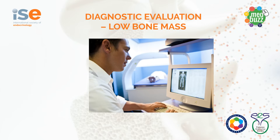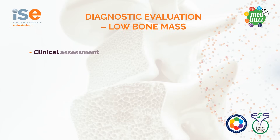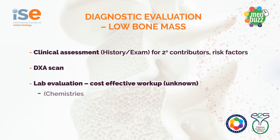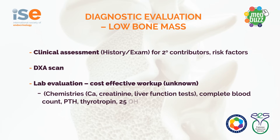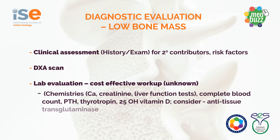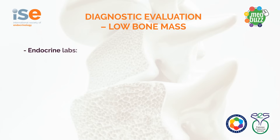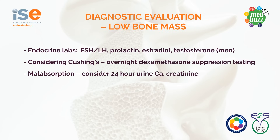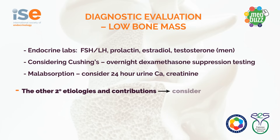In the diagnostic evaluation of low bone mass, we use our clinical assessment tools — history, physical exam, and careful assessment of risk factors in that individual patient. A DEXA scan is very valuable in assessing the quantitative state of bone mass and overall risk. For lab evaluation, we often obtain basic chemistries, vitamin D, parathyroid hormone, and depending on the situation, endocrine labs like gonadotropins, prolactin, estradiol, and testosterone for men. If malabsorption is present or being considered, a 24-hour urine calcium can be very helpful, along with other testing specific to that individual patient's circumstances.